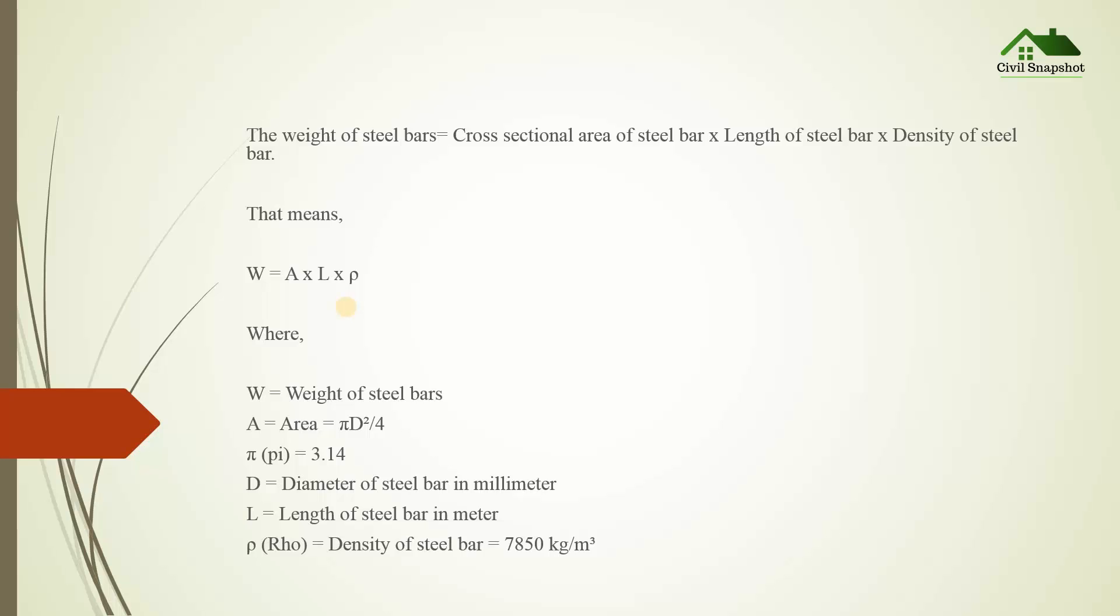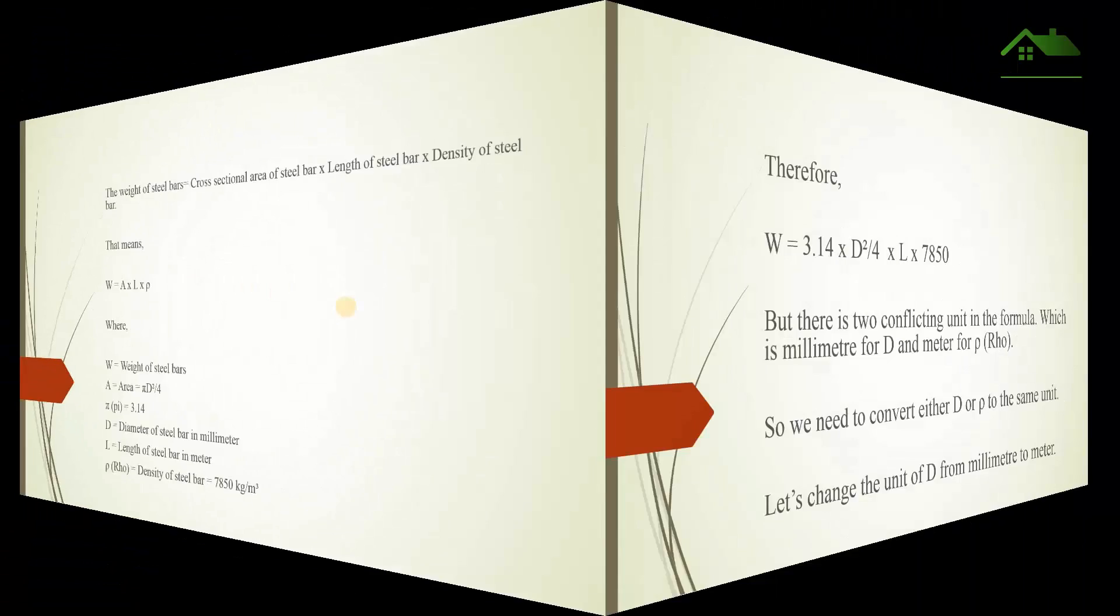A is area = πD²/4, where π = 3.14. D is the diameter of steel bar in millimeters. L is the length of steel bar in meters. ρ (rho) is the density of steel bar = 7850 kg per meter cubed.